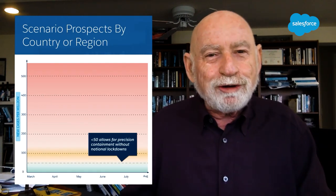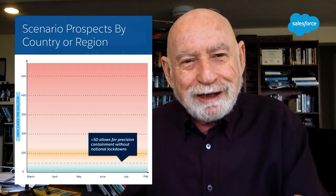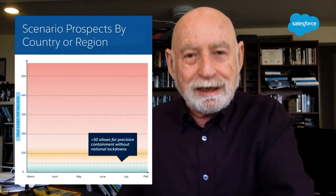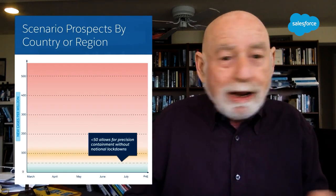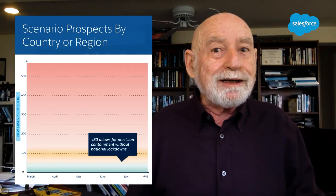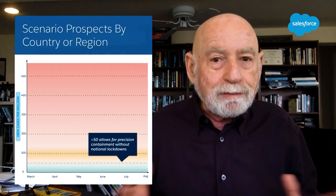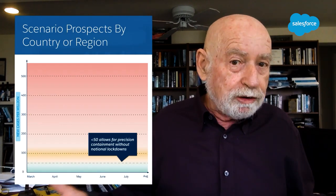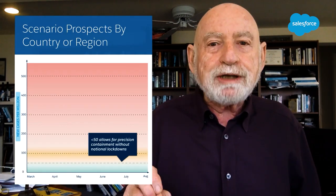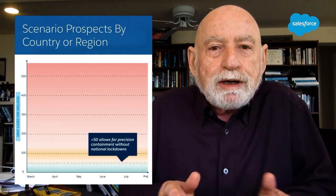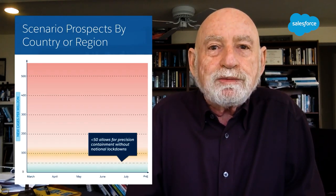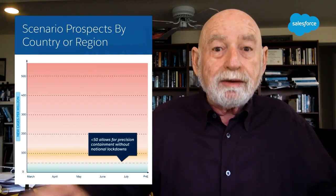In the green zone, you can use cluster busting — early identification of a cluster, then test, trace, and isolate. If you don't have too many cases and you're in that zone, you can probably manage it. Some places in the world, like New Zealand, are probably in that position right now. They've had a recent outbreak, but it's small enough that they can probably contain it by conventional measures without a universal lockdown.